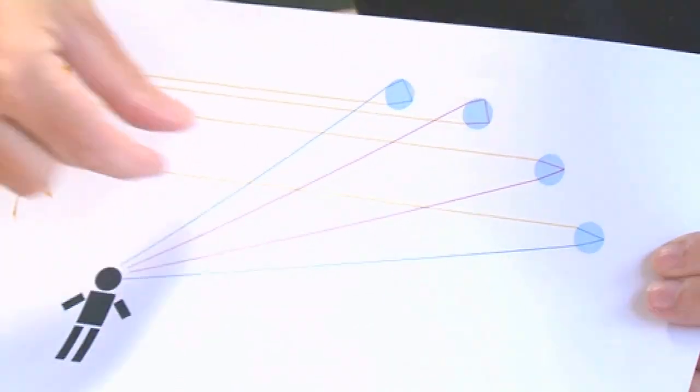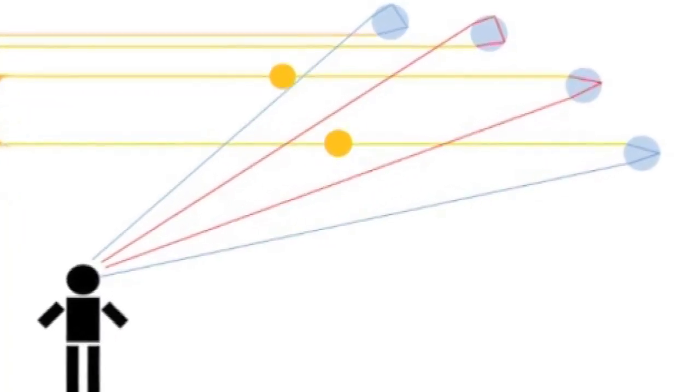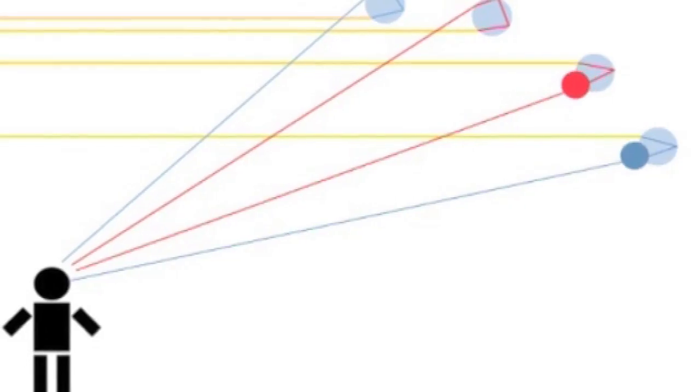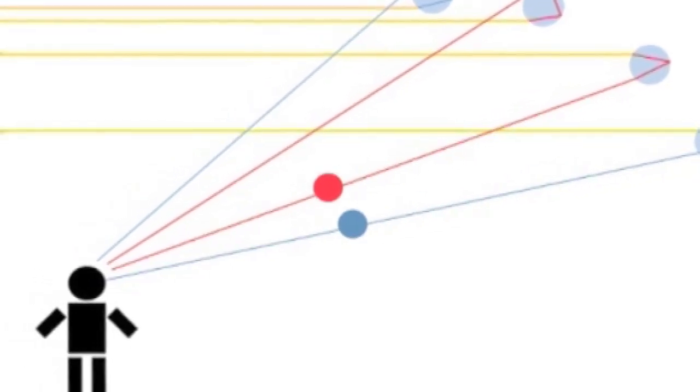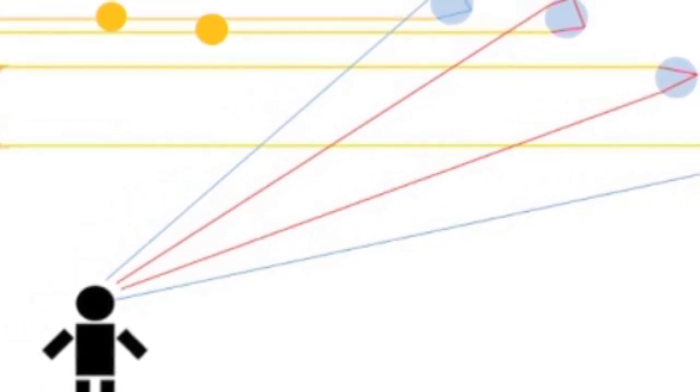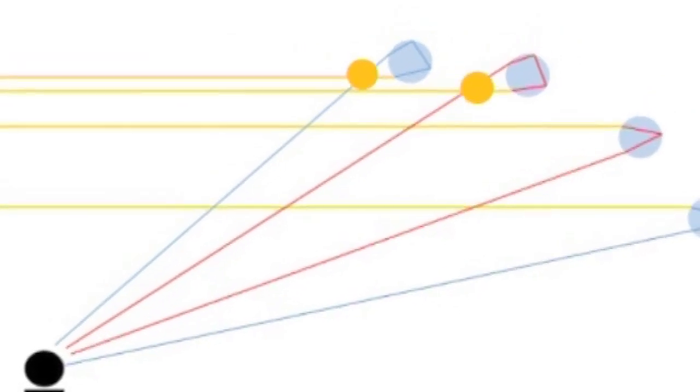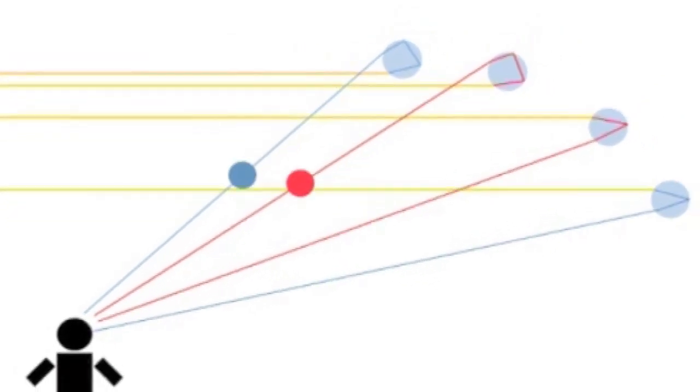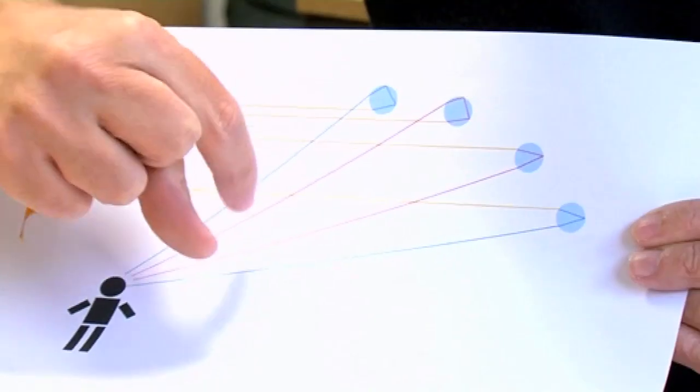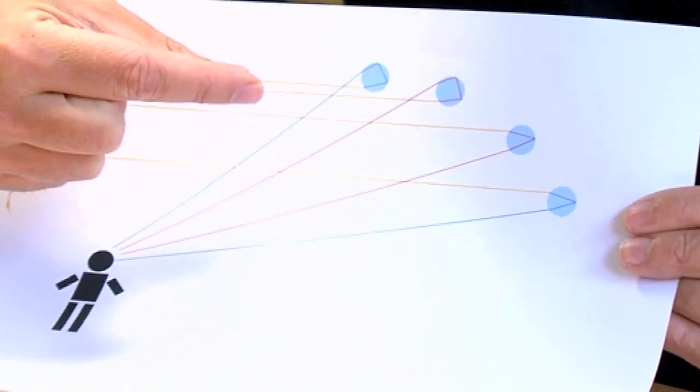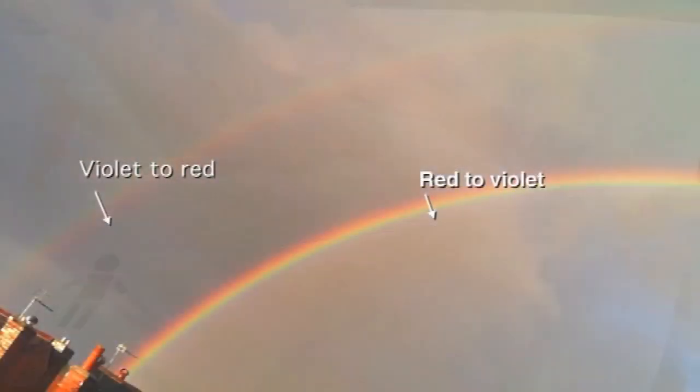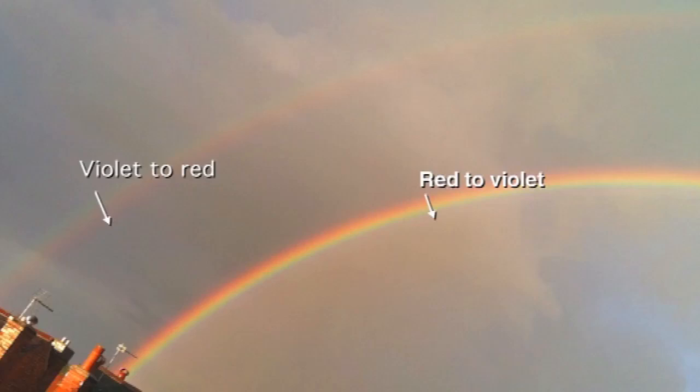So we've still got the first rainbow here where the light's coming in, getting reflected back to us just once off the back of the raindrop, and so we see the colors spread blue to red. But there's a second way that it can happen, that it can actually bounce twice around the raindrop and take this rather more complicated path, and what you can see is that actually the rainbow ends up being reversed because of that second reflection. Where the red light was originally on the outside, if you look at a second rainbow you'll see that actually the color is inverted, that the original rainbow, the inner rainbow goes from blue to red, the second rainbow goes from red to blue.